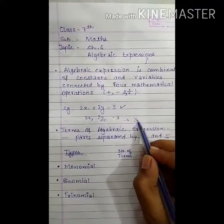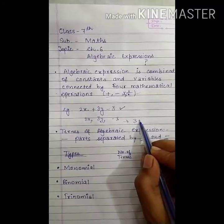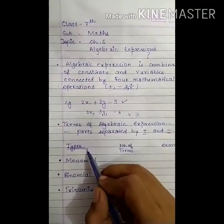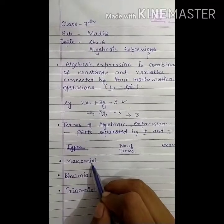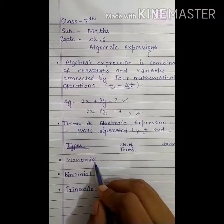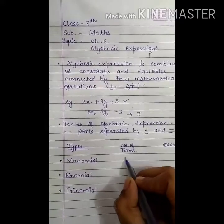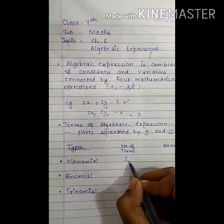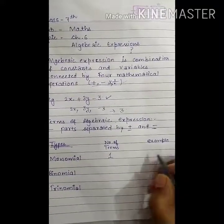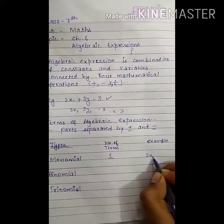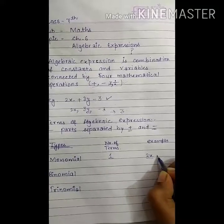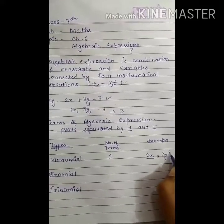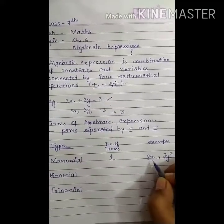Now, on the basis of number of terms, there are types of algebraic expressions. First is monomial. So, monomial kya hai? An expression having only one term. For example, 2x. This is only one term. So, this is monomial. Or, 3y square. This is also monomial.